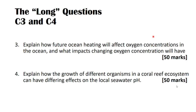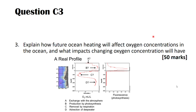Moving on to the longer-form questions — there are two to choose from: one about ocean heating and how it will affect oxygen concentrations, and one about organisms on coral reefs and how they change ocean pH. Looking at question three: explaining how ocean heating will affect oxygen concentrations is the first part, then what impacts those concentration changes might have. It would be useful to structure your answer by first describing the concentration distribution of oxygen in the ocean, then discussing what processes cause changes in oxygen concentration.